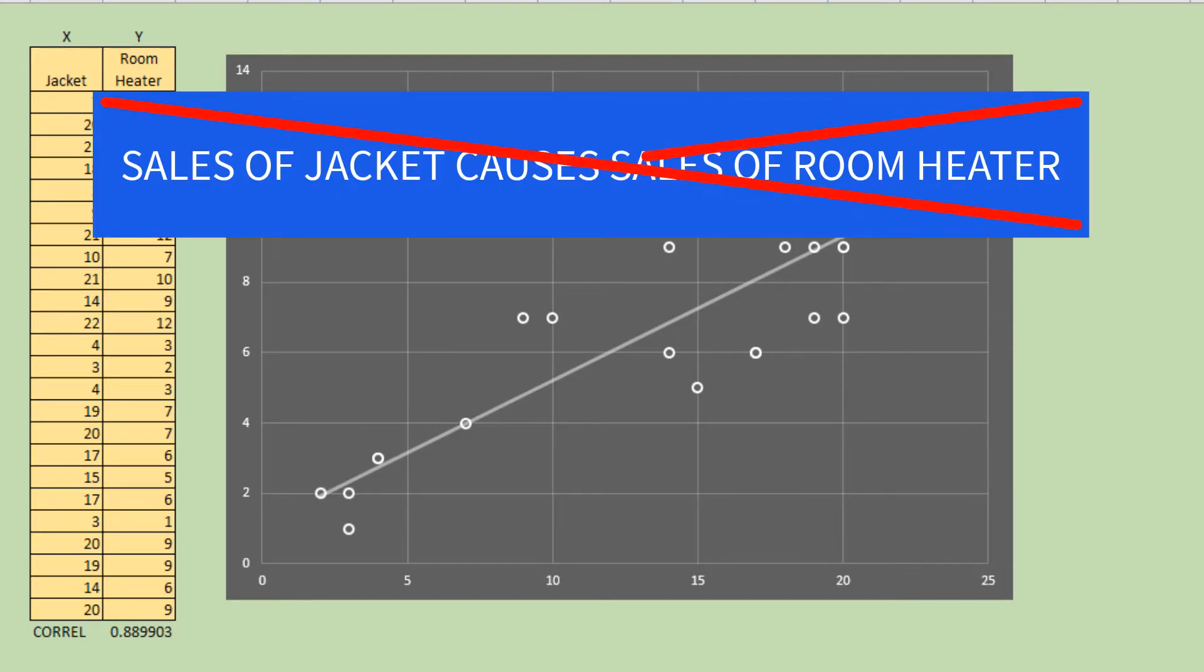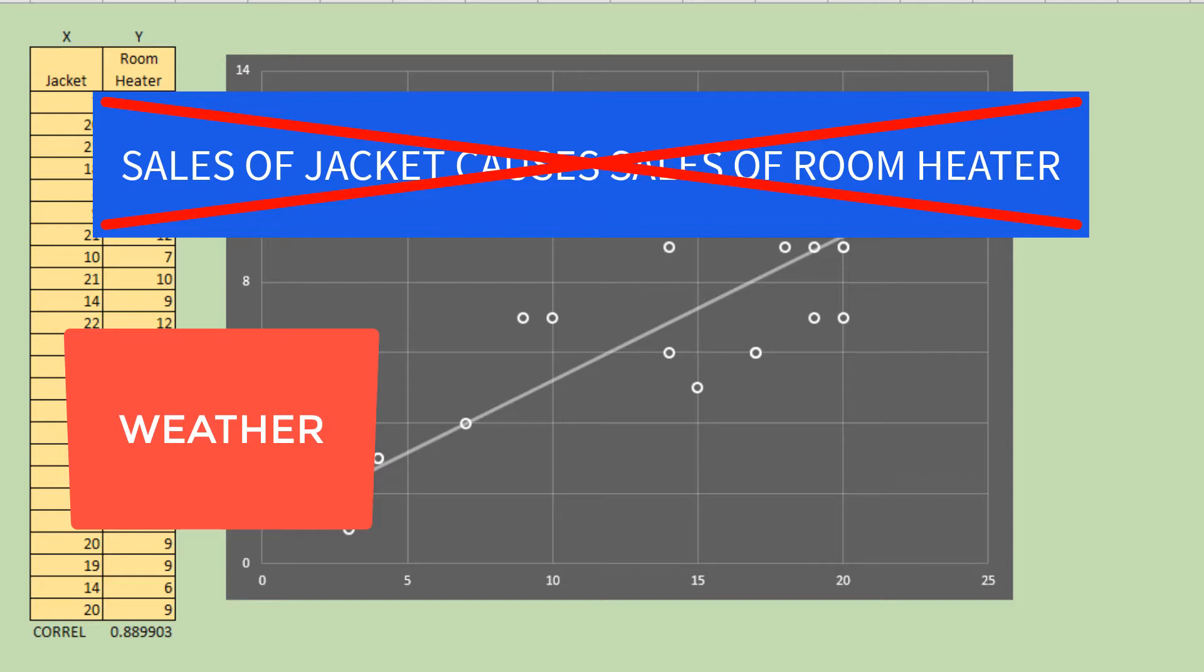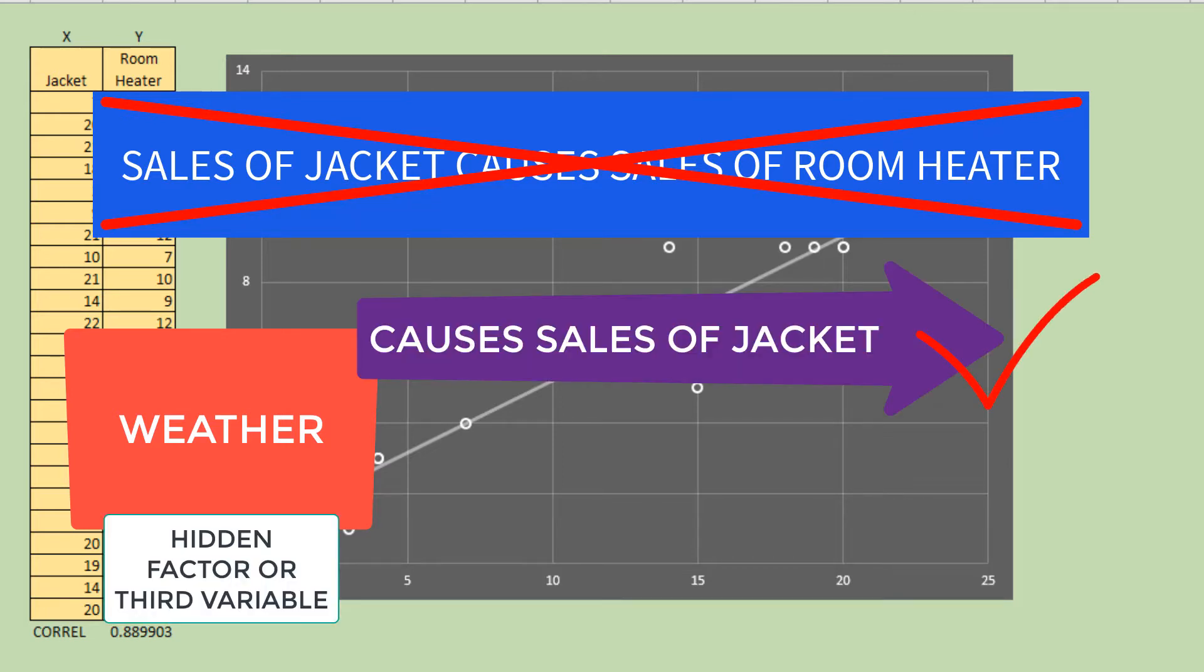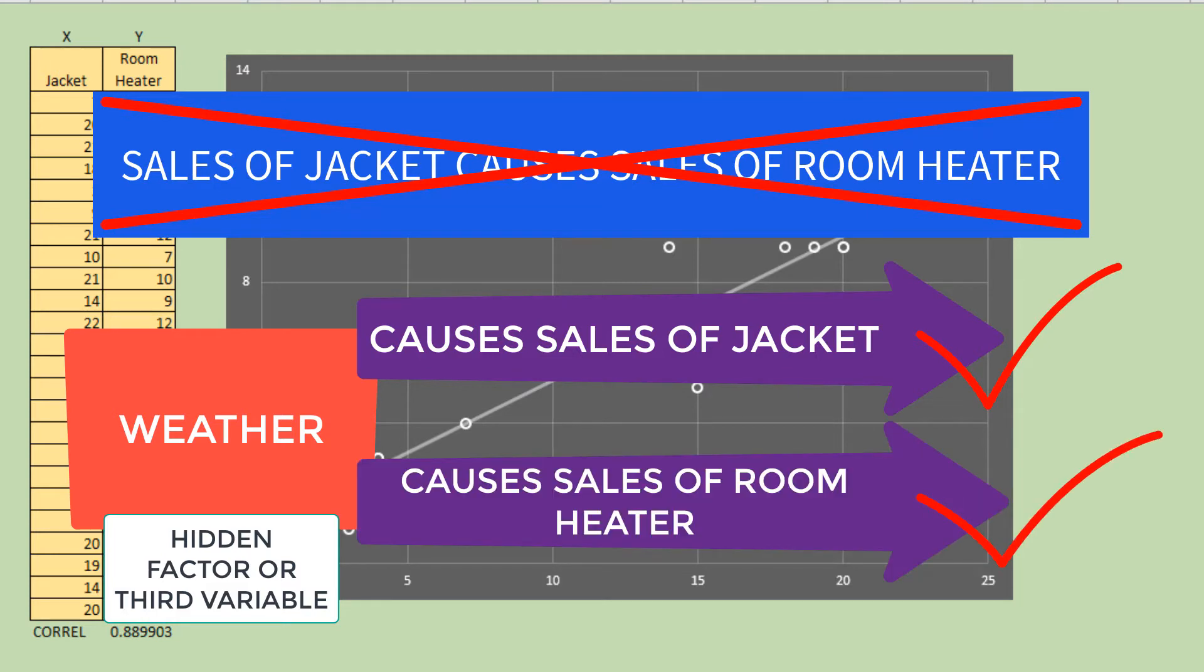It is not the increase of sales of jacket causing the increase in sales of room heater. The winter season or the weather in general, the hidden factor or the third variable, actually causes the sales increase of both jacket and room heater.